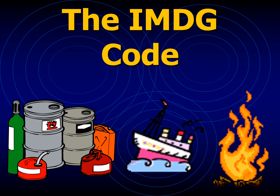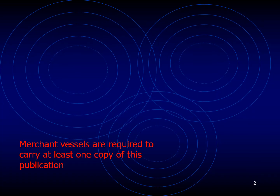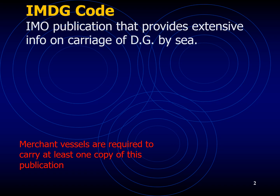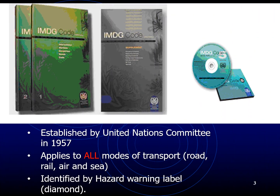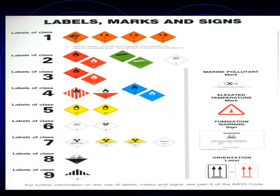The IMDG Code is provided on all ships that are required to carry dangerous goods. When I say a copy of the IMDG Code, since 2008 it has two volumes and one supplement. Before 2008, IMDG actually had four volumes and a supplement, but since 2008 they introduced the CD version and combined the four volumes into two, while still keeping the supplement.